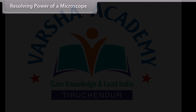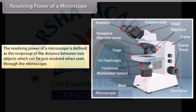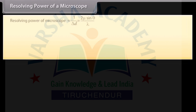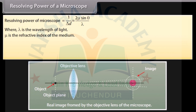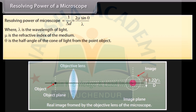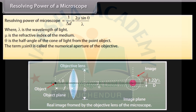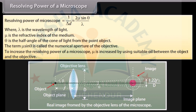Resolving power of a microscope is defined as: where lambda is the wavelength of light, mu is the refractive index of the medium, and theta is the half angle of the cone of light from the point object. The term mu·sin(theta) is called the numerical aperture of the objective. To increase the resolving power of a microscope, mu is increased by using suitable oil between the object and the objective.